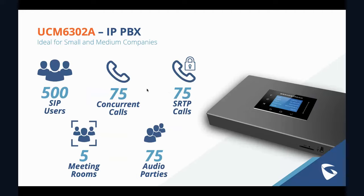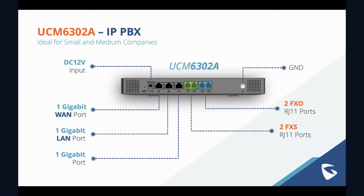Moving up to the 6302A: you double the amount of users as we go up the lineup. The 6302A supports 500 users and 75 concurrent calls, with five voice conferencing meeting rooms that support up to 75 audio parties. FXS and FXO ports return here — two of each — along with the same three gigabit ports on all models. With support for up to 500 users, this device is a good option for a small to medium company, especially one that might be growing.